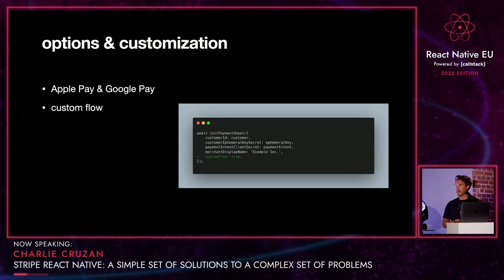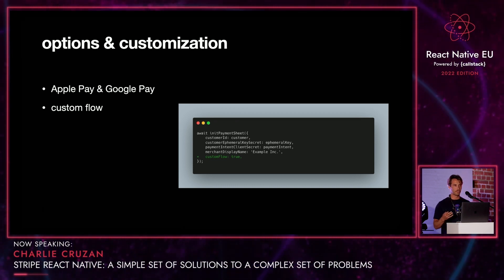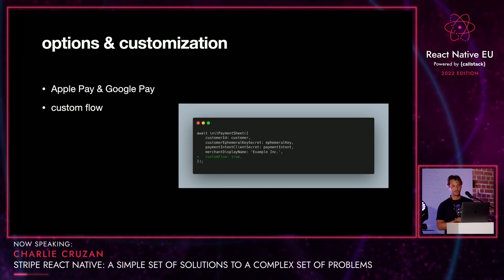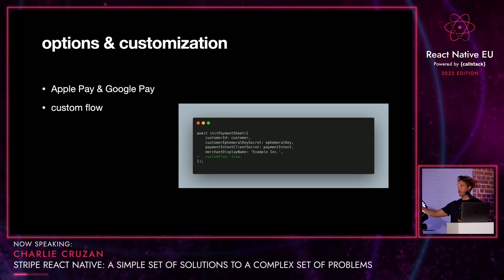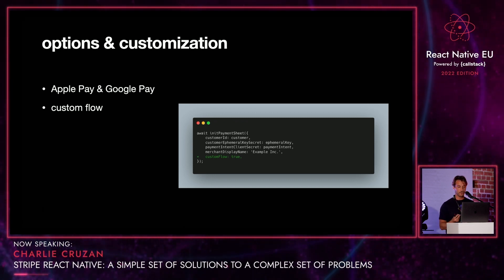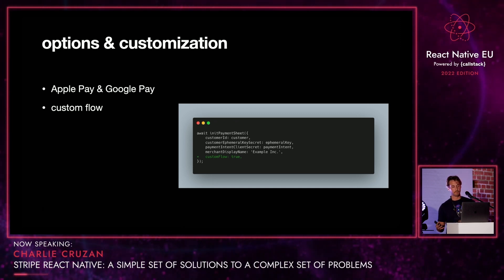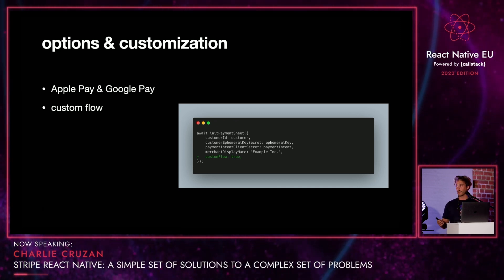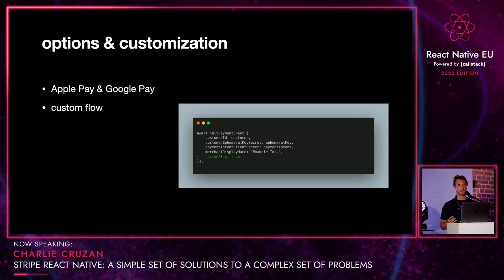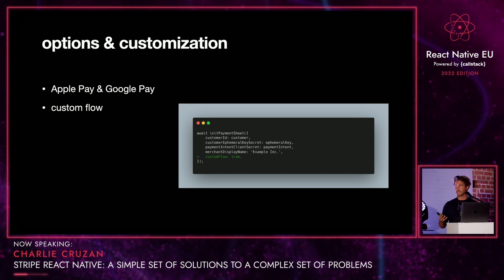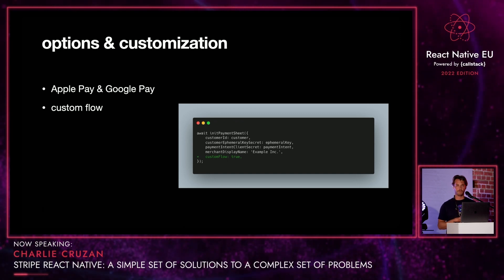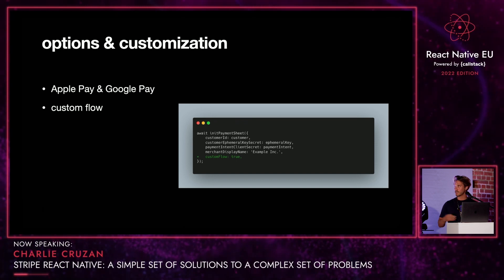Plus, the payment sheet allows you to customize your checkout experience in a lot of different ways. One of these is this custom flow prop. When you pass it as true, you separate out the steps of actually picking a payment method versus confirming the purchase. This way you have more control over the actual checkout portion, and mostly what Stripe is handling for you is payment method creation. So if you want to do some checks after a payment method was added but before checking out, you can do that really easily.